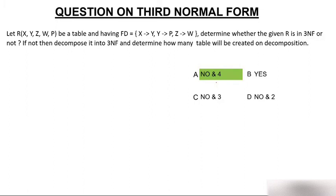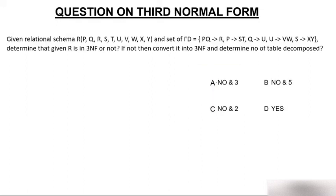Now let's start with the second question. Given relational schema R with attributes P, Q, R, S, T, U, V, W, X, Y and functional dependencies: PQ to R, P to ST, Q to U, U to VW, and S to XY. Determine whether the given R is in 3NF or not, and if not, convert it to 3NF and determine the number of tables.